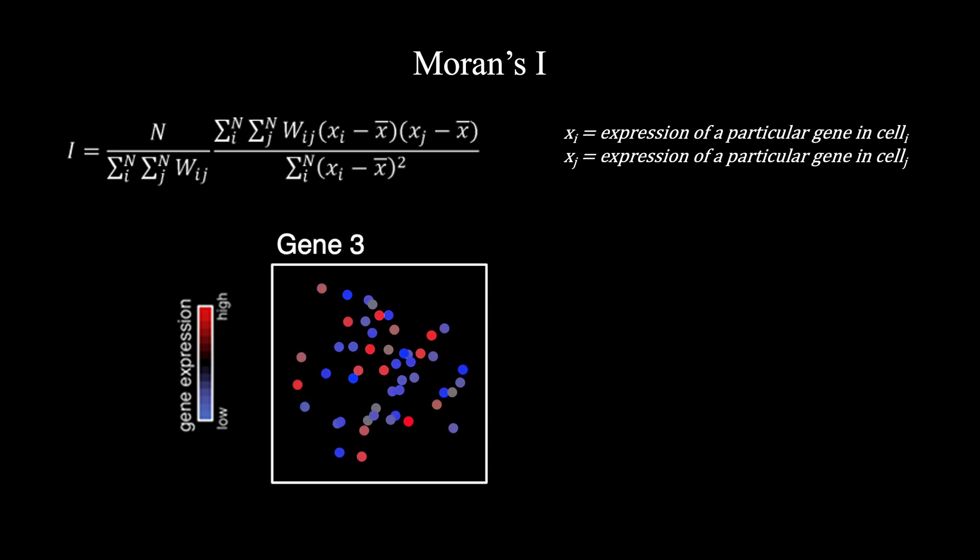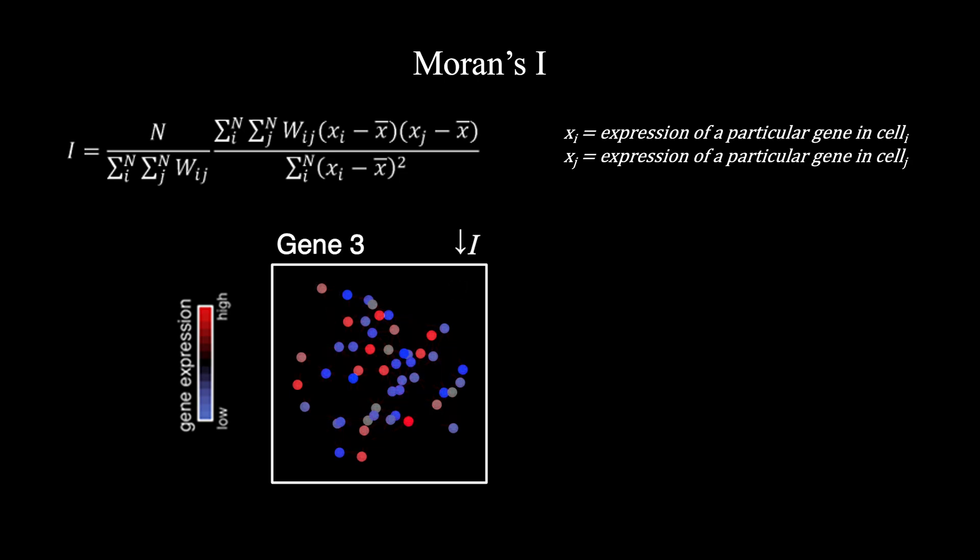Now let's consider gene 3, which visually looks quite variable but not in a spatially coordinated manner. If we go through this exercise of considering all combinations of cell I and cell J and evaluating their contributions, we can see that the Moran's I statistic for this gene will generally be quite small. See if you can apply what we've learned to hypothesize whether the Moran's I statistic will be large or small for the following gene expression patterns.